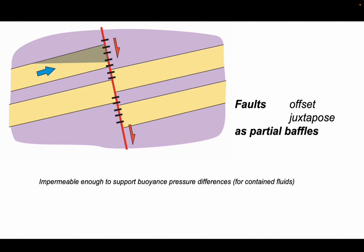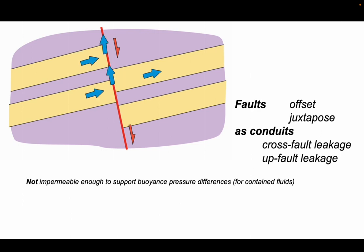Faults may act as partial baffles where they juxtapose the sandstones against the impermeable shales but there can be cross-fault leakage where the sandstones are juxtaposed against one another. Or faults could have high permeabilities and act as conduits, enhancing cross-fault leakage and up-fault connection of fluids through sedimentary successions.